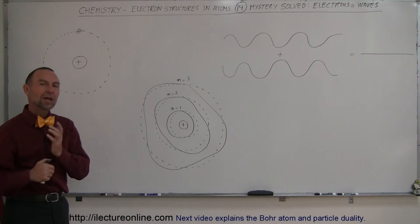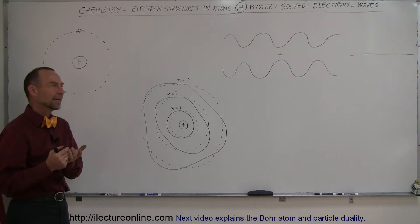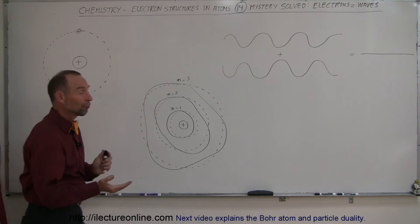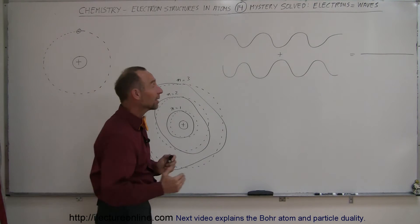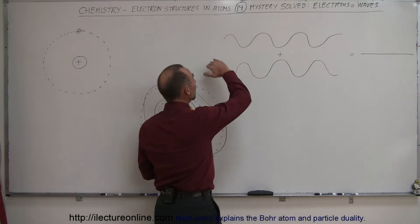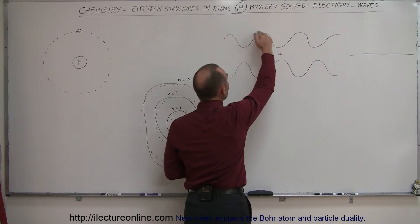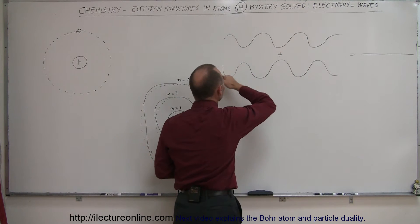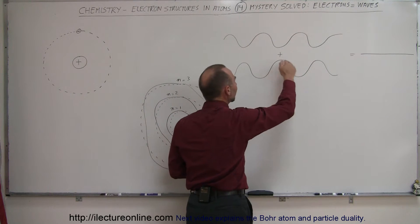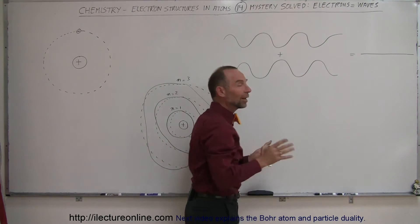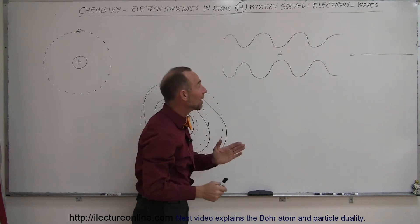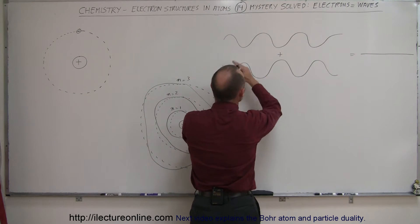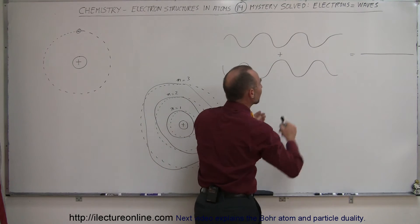One thing we have to understand is the concept of the interference of waves. From classical mechanics, if we think about one wave that looks like this, and we have a second wave that looks like this, you can see right away that both waves have the same wavelength and the same frequency.